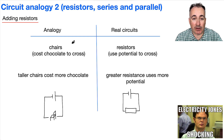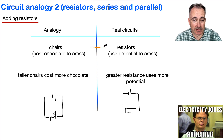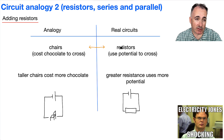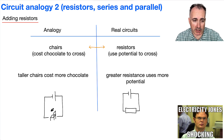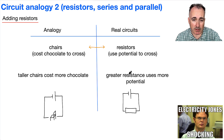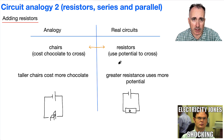We're going to be introducing something called chairs. Chairs aren't that complicated, but chairs are going to represent resistors in our analogy here. So one chair is a resistor. I've just drawn a chair here, and in real life, that's going to be a resistor.